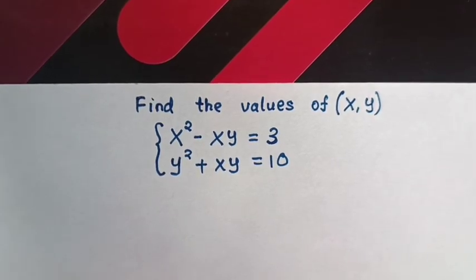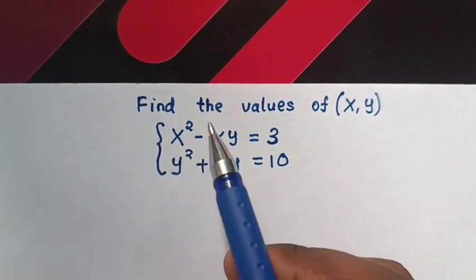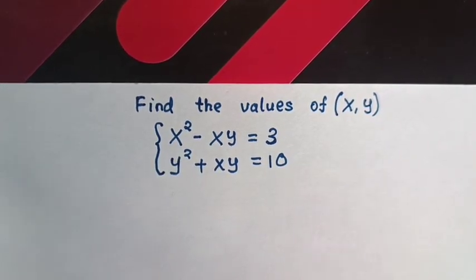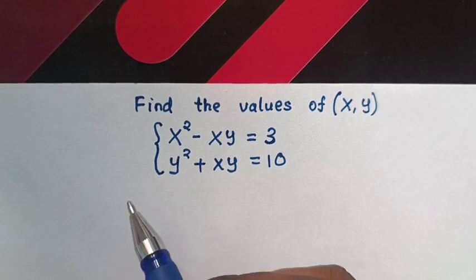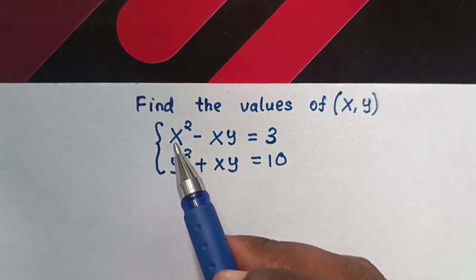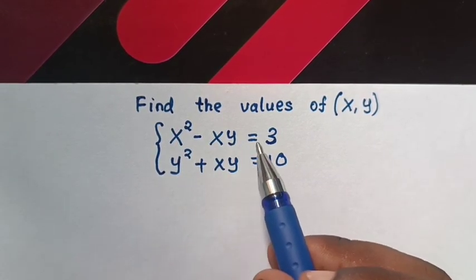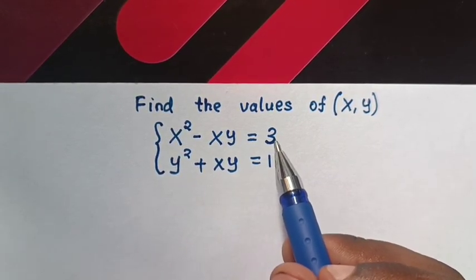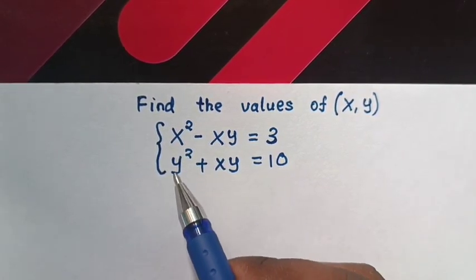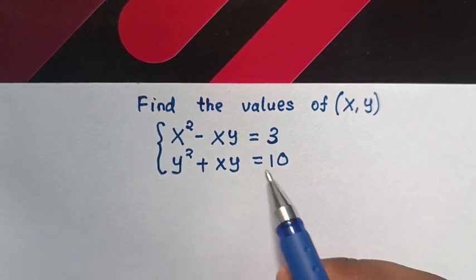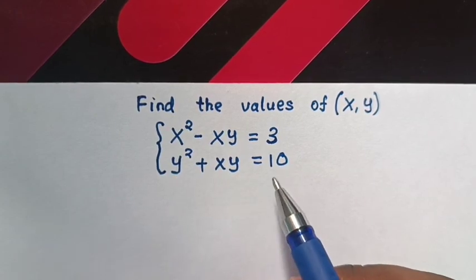Hello. How to find the value of x and y from the system of equations: x squared minus xy is equals to 3, and y squared plus xy is equals to 10.